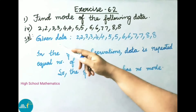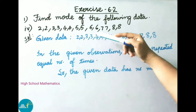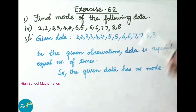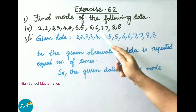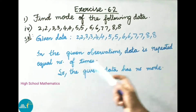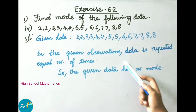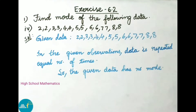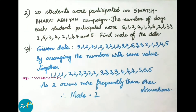Question 1, part three: Find the mode of 2, 2, 3, 3, 4, 4, 5, 5, 6, 6, 7, 7, 8, 8, 8. The given data is repeated equal number of times across observations, so the given data has no mode.